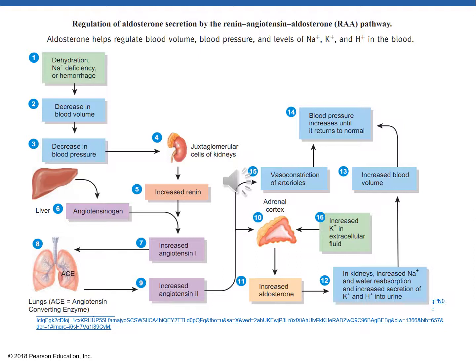In the renin-angiotensin-aldosterone pathway: the liver produces angiotensinogen floating in the blood. If blood pressure drops, the juxtaglomerular cells of the kidney release renin. Renin causes angiotensinogen to turn into angiotensin 1. When angiotensin 1 is exposed to ACE — angiotensin converting enzyme, present in the lungs and other parts of the body — it turns into angiotensin 2. Later you'll learn about a drug category called ACE inhibitors, which block the effect of ACE and reduce production of angiotensin 2. Angiotensin 2 causes vasoconstriction of arterioles, increasing blood pressure. It also affects the adrenal cortex, making it secrete aldosterone. Aldosterone impacts the collecting ducts of the renal tubules, causing sodium and water reabsorption, which increases blood volume.